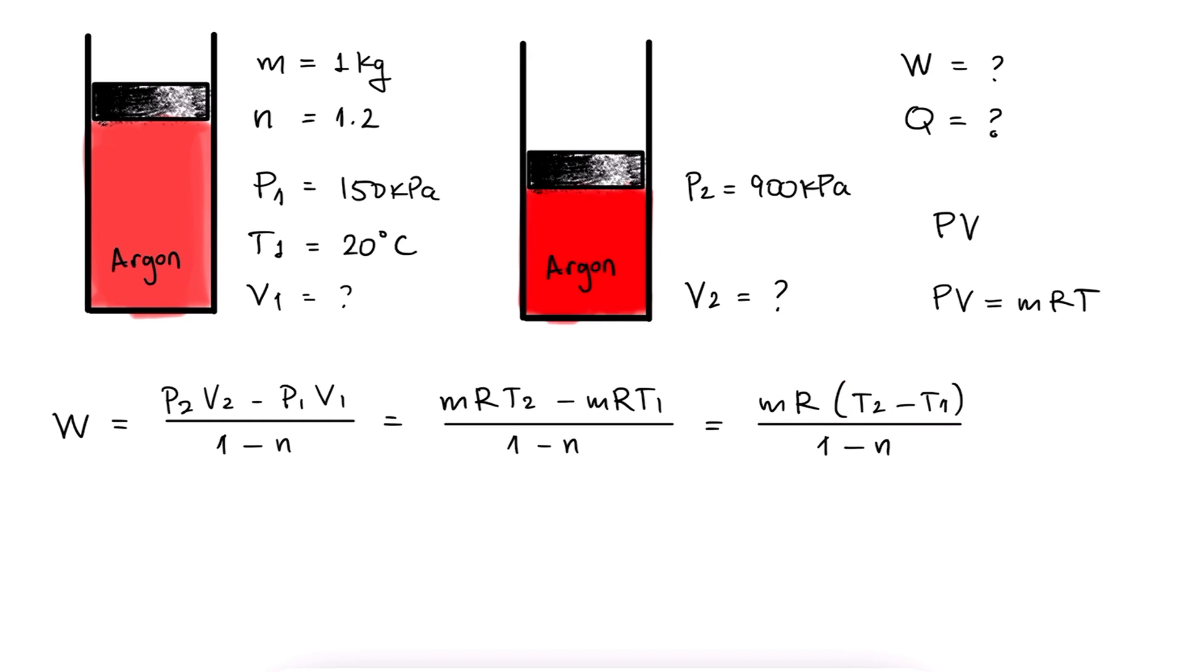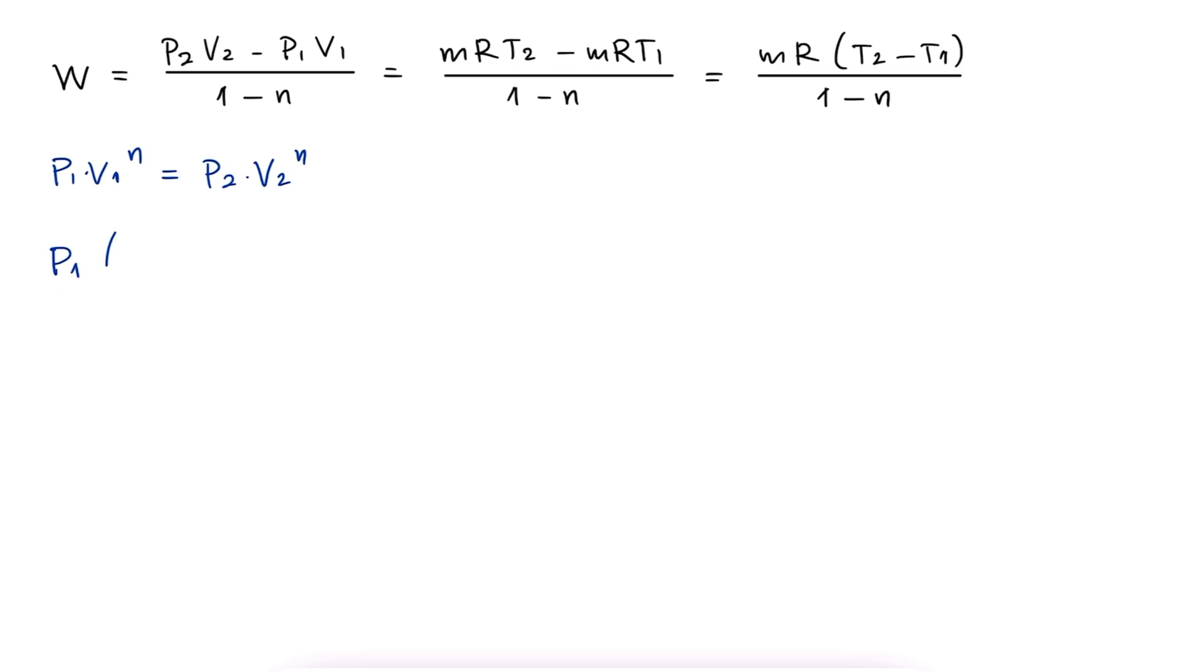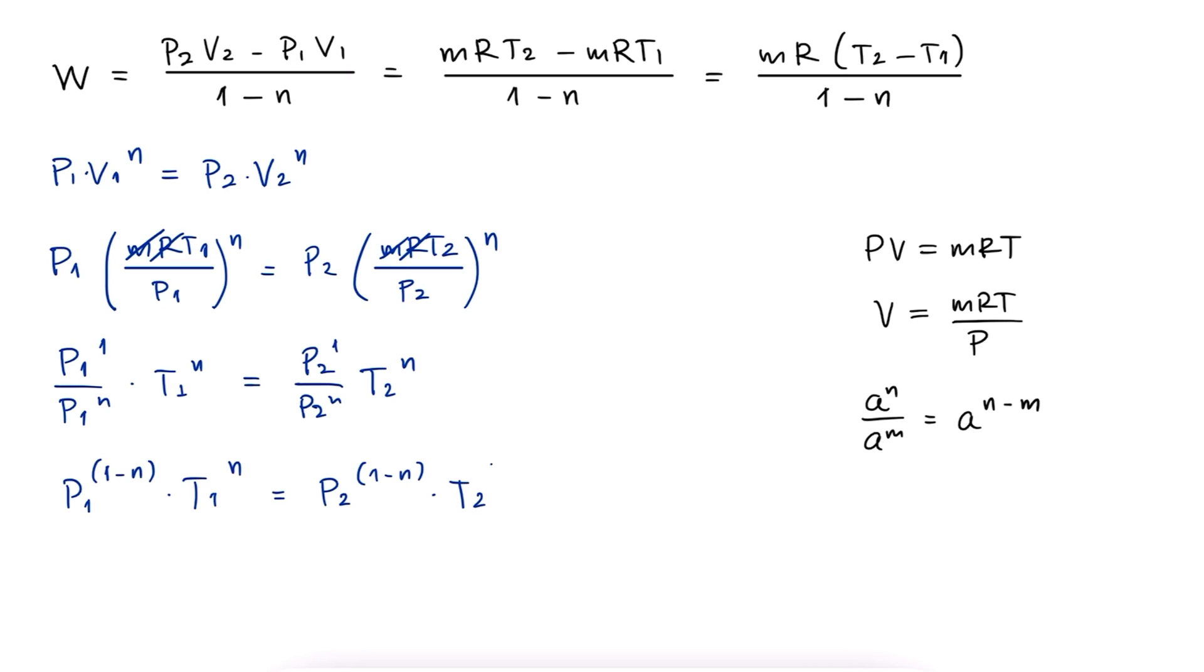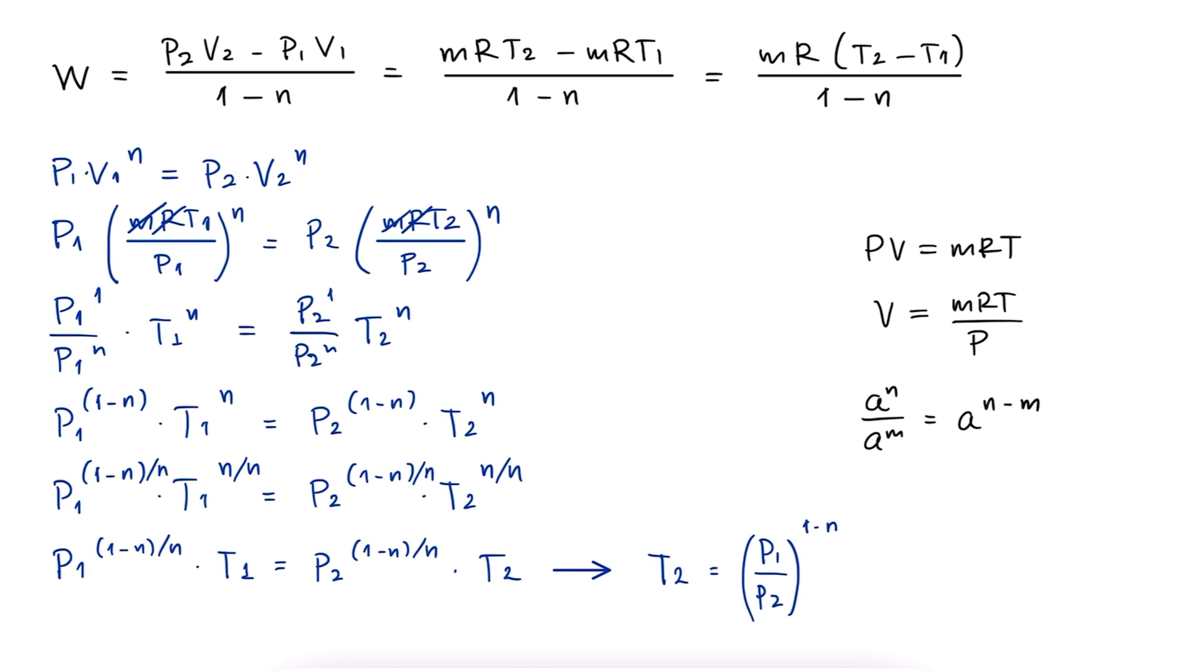However, we do know that PV to the n is constant. So if P1V1 to the n is equal to P2V2 to the n, and write the volumes in terms of T and P using the ideal gas equation, we can distribute the exponent, use the exponentiation rule for division, take the nth root on both sides, and solve for T2.